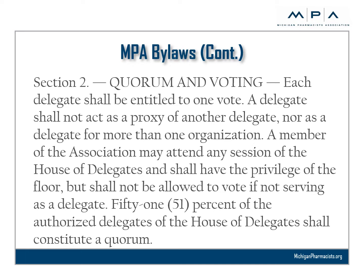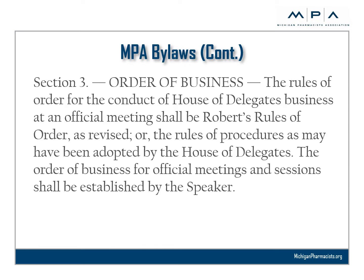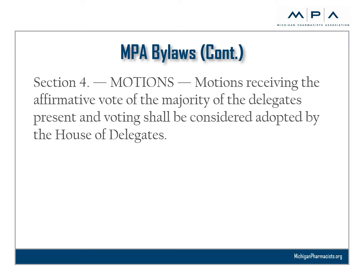Fifty-one percent of the authorized delegates of the House of Delegates shall constitute a quorum. Section 3, Order of Business: the rules of order for the conduct of the House of Delegates' business at an official meeting shall be Robert's Rules of Order as revised, or the Rules of Procedures as may have been adopted by the House of Delegates. The order of business for official meetings and sessions shall be established by the Speaker. Section 4, Motions: motions receiving the affirmative vote of the majority of the delegates present and voting shall be considered adopted by the House of Delegates.